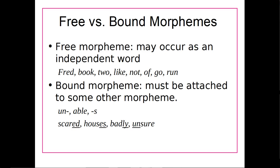To start off with, we'll be looking at morphemes that are words versus morphemes that are called an affix. Another way to put this is a free morpheme versus a bound morpheme. A free morpheme is that smallest bit of a word that has meaning and can occur as an independent word. For example, someone's name like Fred, or book, or to, or like, or not, or of, or go, or run — those can all occur as words on their own in English. So those are free morphemes.